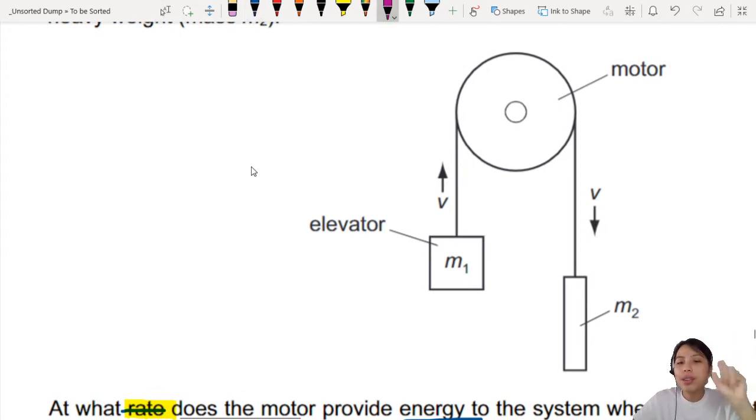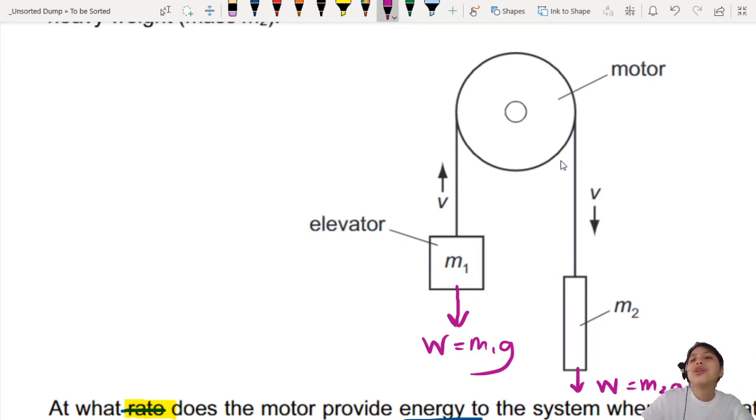On the elevator, you're going to have the weight of the elevator, which is W equals to M1G. Then you have the other side also a thing hanging there. That one also has a weight, which is M2G.